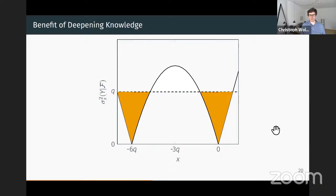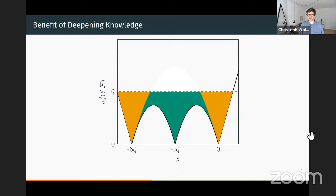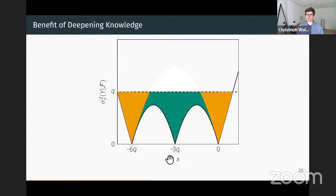For deepening knowledge, suppose we know the answer to question zero and question minus 6Q. We want to find a new answer. Deepening breaks the long research area into two shorter ones—from minus 6Q to minus 3Q, and minus 3Q to zero—both with more precise conjectures. The largest value of a research area occurs when its length is 3Q, so if you have exactly such an interval, the best thing is to jump to the midpoint and create two areas with very precise conjectures.